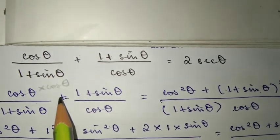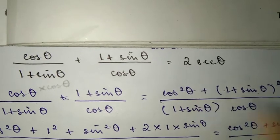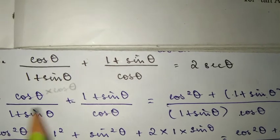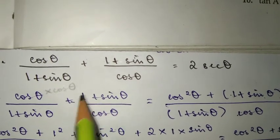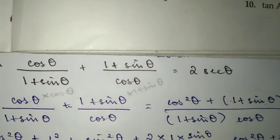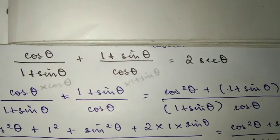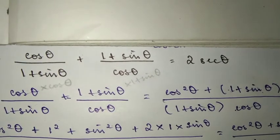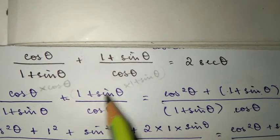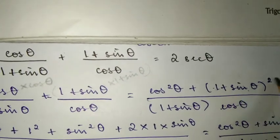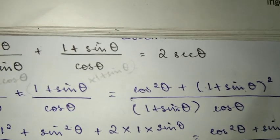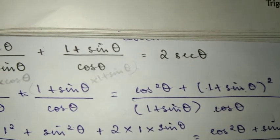Plus, for the second term, the denominator has 1 plus sin theta, so we multiply the numerator by 1 plus sin theta. This gives us 1 plus sin theta times 1 plus sin theta, which is 1 plus sin theta whole squared. Don't write 1 plus sin squared - it's 1 plus sin theta, whole square.